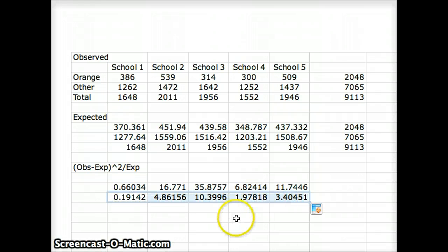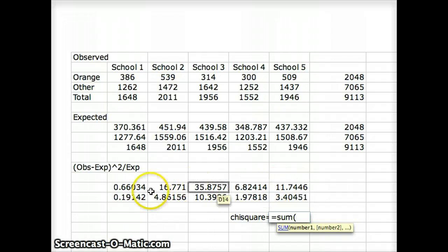We know that our chi-square is the sum of all those. Our chi-square will equal the sum of all of these numbers. And what does that give me? It gives me a chi-square of 92.711.